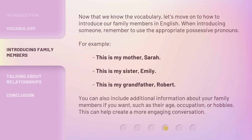Now that we know the vocabulary, let's move on to how to introduce our family members in English. When introducing someone, remember to use the appropriate possessive pronouns. For example, this is my mother, Sarah. This is my sister, Emily. This is my grandfather, Robert. You can also include additional information about your family members if you want, such as their age, occupation, or hobbies. This can help create a more engaging conversation.